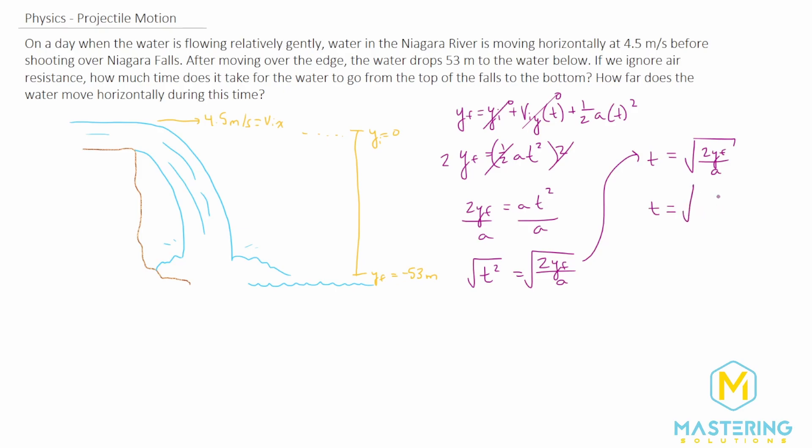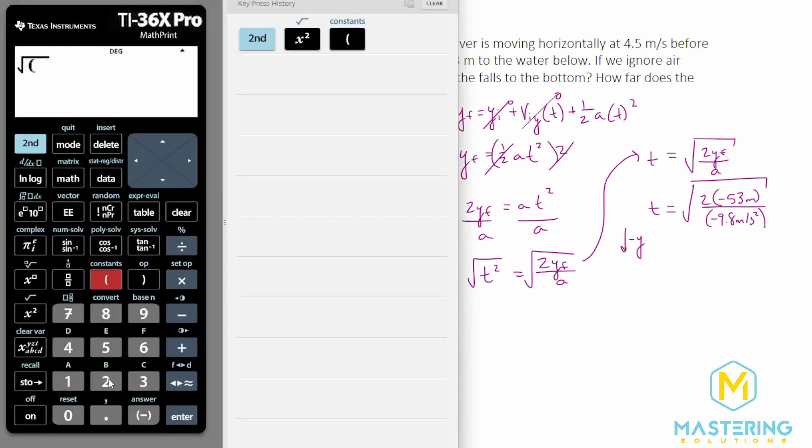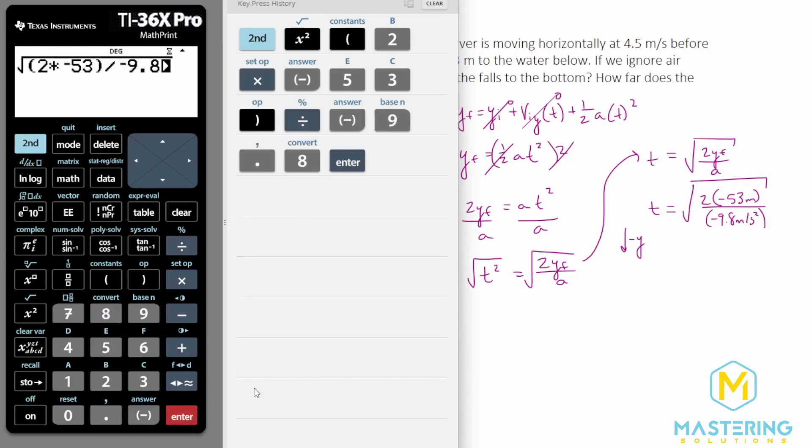So time, when we plug in our values, the y final we said is negative 53 meters divided by the acceleration. And again, we're looking at the y component. So the acceleration will only be gravity, which is negative 9.8 meters per second squared, because gravity is pointing in the negative y direction. So we have the square root of two times the delta y is negative 53 divided by negative 9.8 meters per second squared, which gives us a time that is in the air of 3.28.